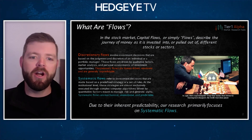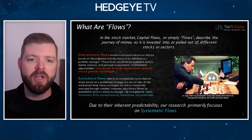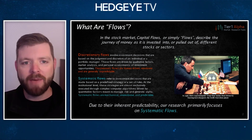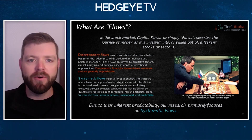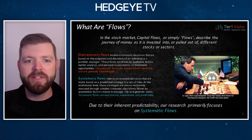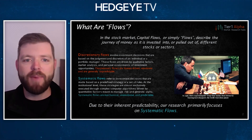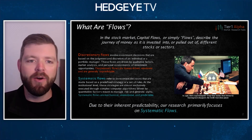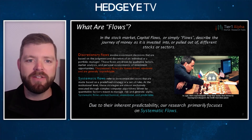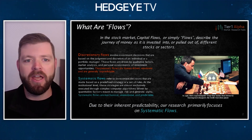Discretionary flows are based on the personal assessment of individual investors. So if Apple comes out with earnings and you think those earnings are going to be bullish for Apple, you buy Apple and you create a flow in those transactions. The other kind of flow is systematic flows, which is where a bulk of our research is focused — machine-driven buying and selling based on systematic, rules-based strategies, often driven by computers and quants.